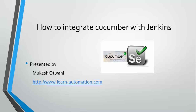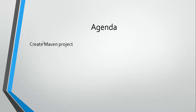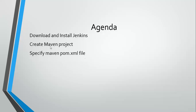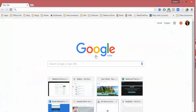Hey, hi everyone, this is Mukesh from learn-automation.com. Today in this video we will mainly focus on how to integrate Cucumber tests with Jenkins. We will cover how to download and install Jenkins, create a Maven project in Jenkins, and finally execute the pom.xml file from Jenkins.